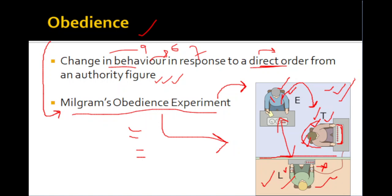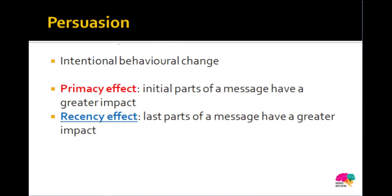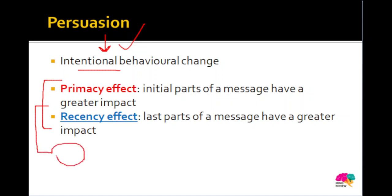These are your social influence strategies — conformity, compliance, and obedience. Then there is persuasion. Persuasion is an intentional behavior change — unlike social influence which can be intentional or unintentional, persuasion is always intentional. Two important terms related to persuasion are: primacy effect and recency effect, which together are called the serial position effect.